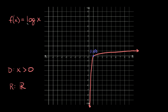Lastly we have f of x is equal to the log of x, the logarithmic parent function. The graph gets really close to the y-axis but never actually touches it, and always runs through the point one comma zero. Another key point is ten one. The domain is x is greater than zero — strictly greater than zero since we never touch zero. The range is all real numbers, since the graph decreases toward negative infinity and keeps increasing in the y direction.